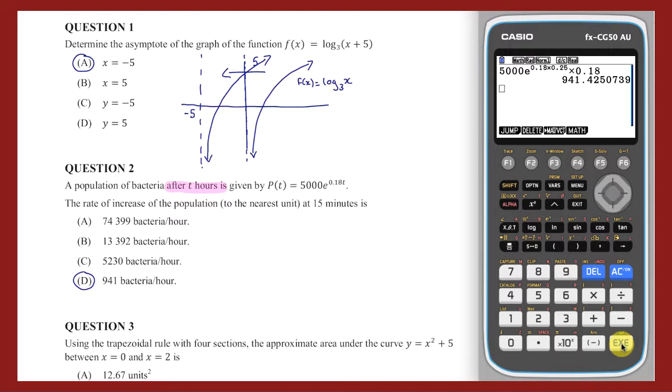This same result can be calculated without using the laws of differentiation by opening the math menu of the CG50 via F4, choosing the first derivative by pressing F4 again, entering the function, arrowing right, entering the value 0.25, and then pressing Execute. Either way, the answer is D.